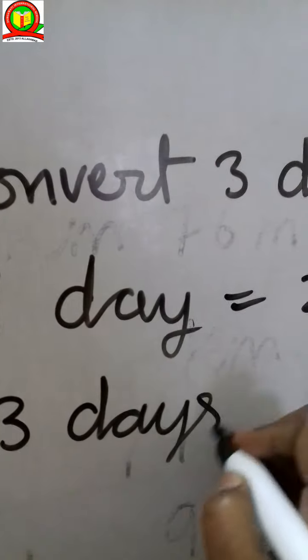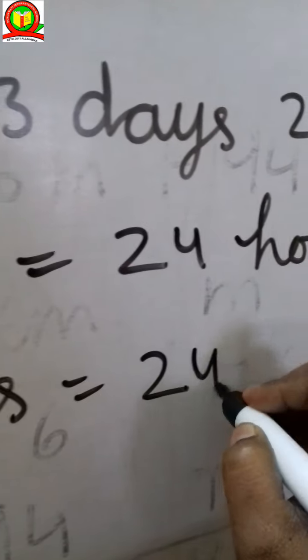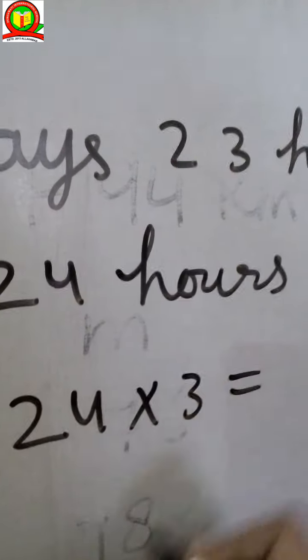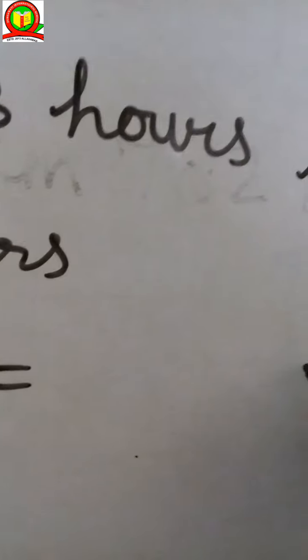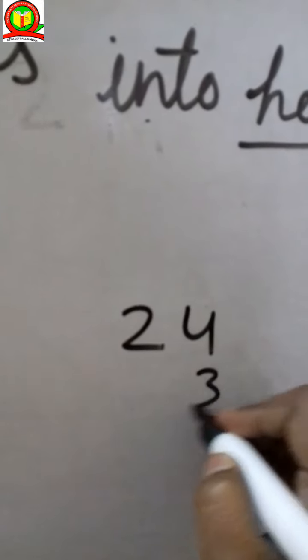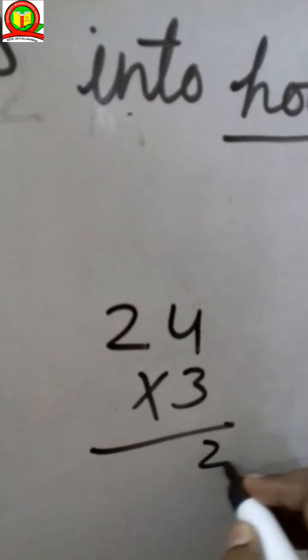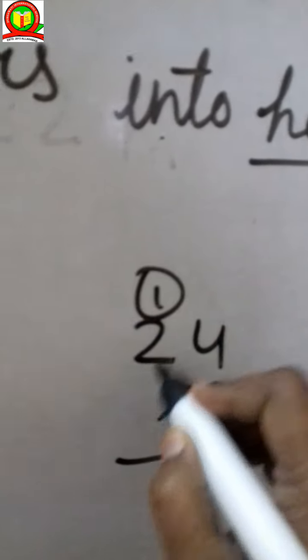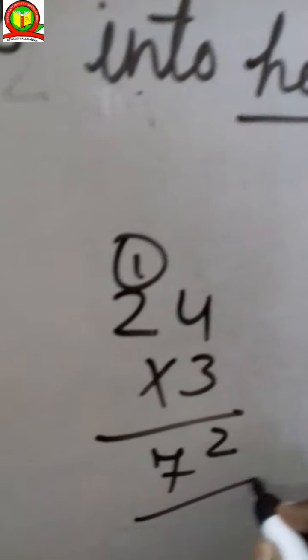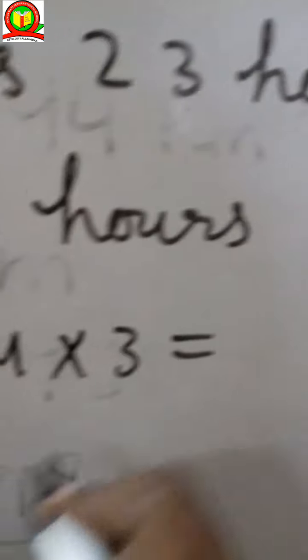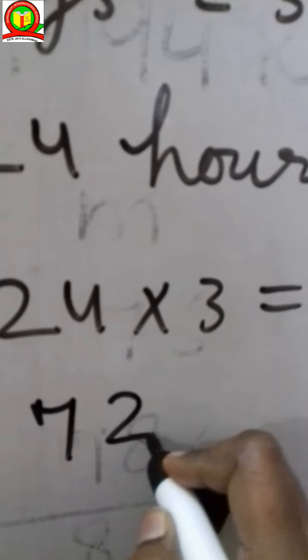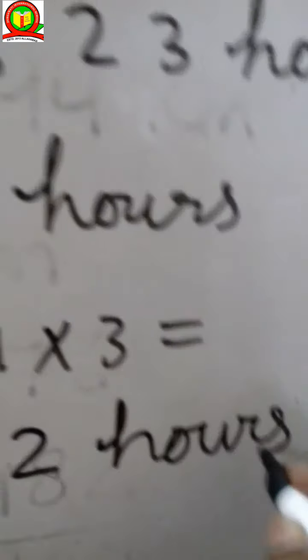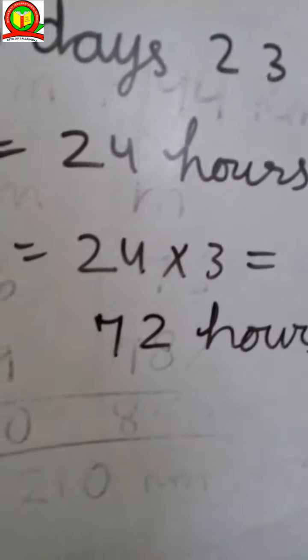We have 3 days, so 24 into 3. How much? I have a rough work here. The rough work is 24 into 3. 3 times 4 is 12, 3 times 2 is 6, plus 1 is 7. So 72. Now here 72 hours. We got 72 hours.